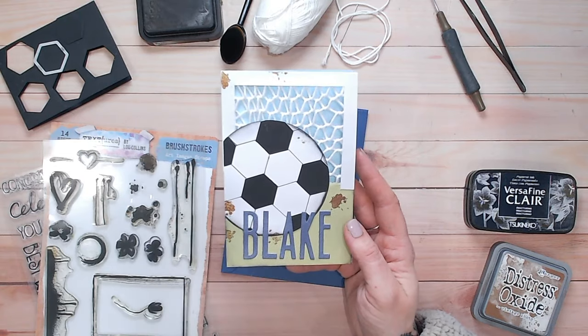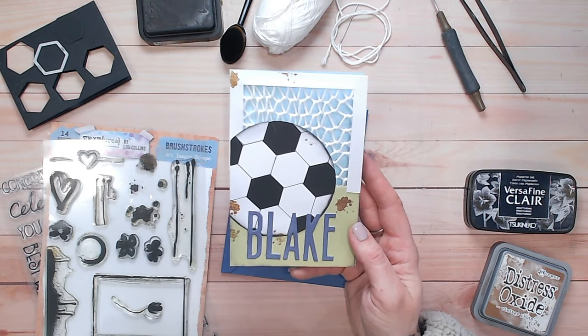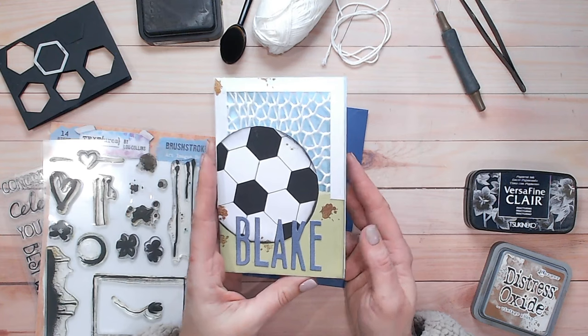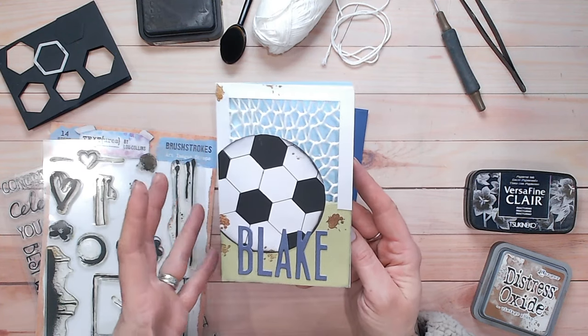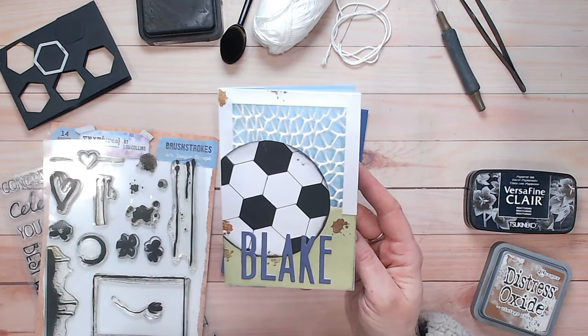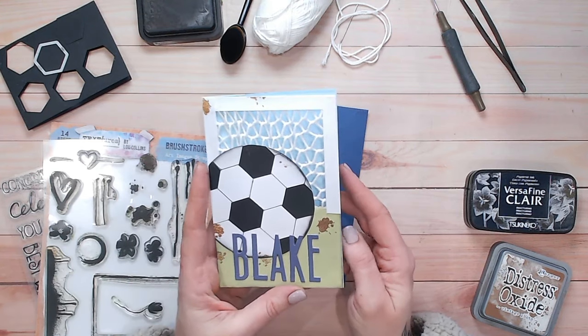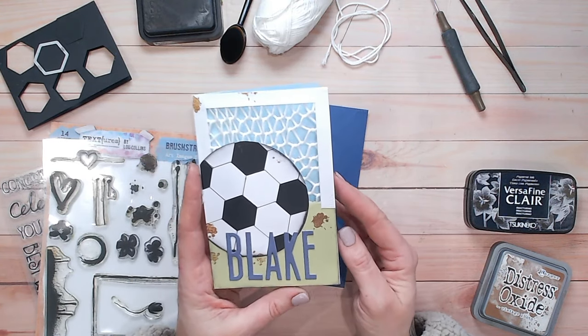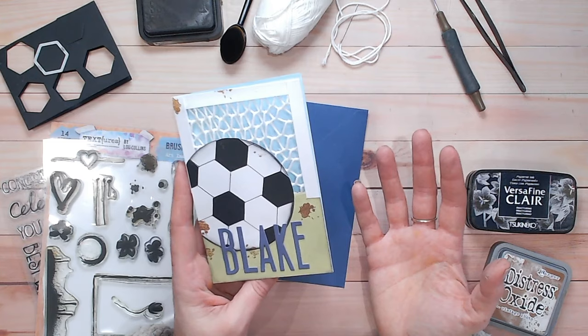It's suitable for, well I made it for a young boy who absolutely loves his football. It's really simple though because you don't need any specialist dies or anything. I've simply used a couple of nesting dies, I've woven some string for the net there and used plain cardstock.